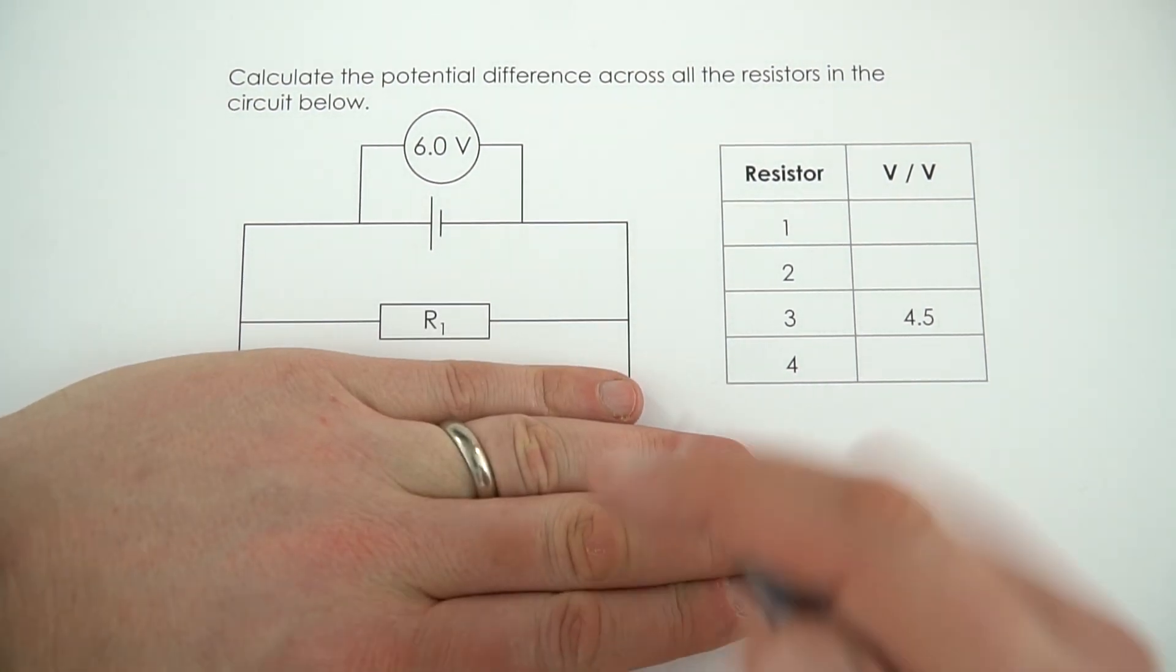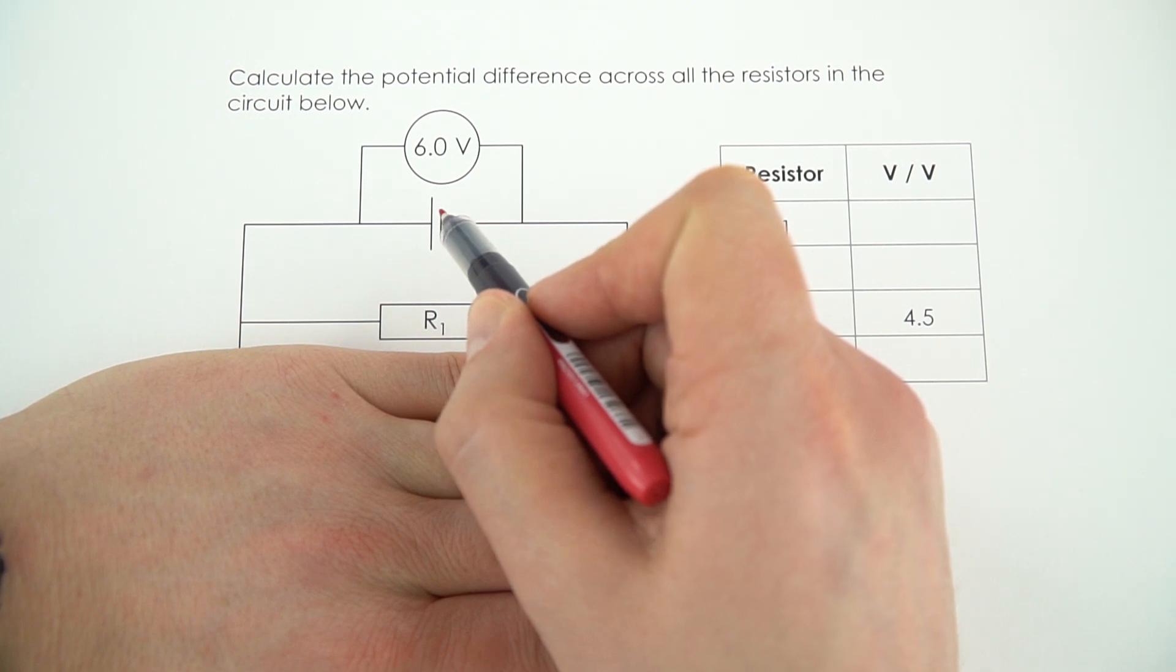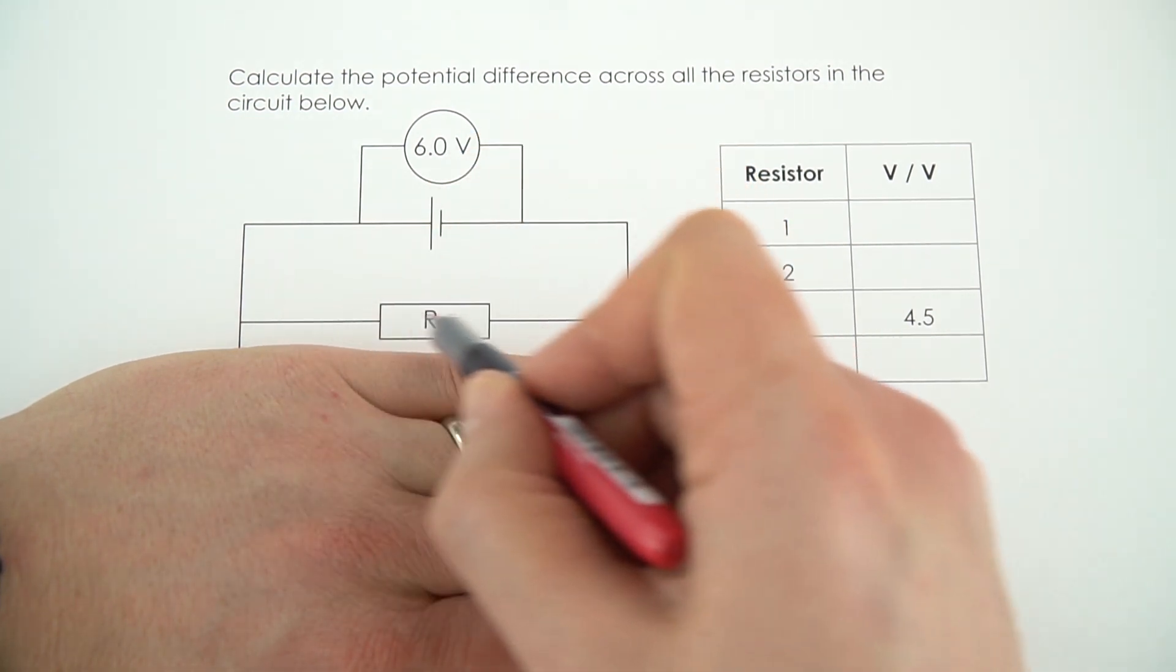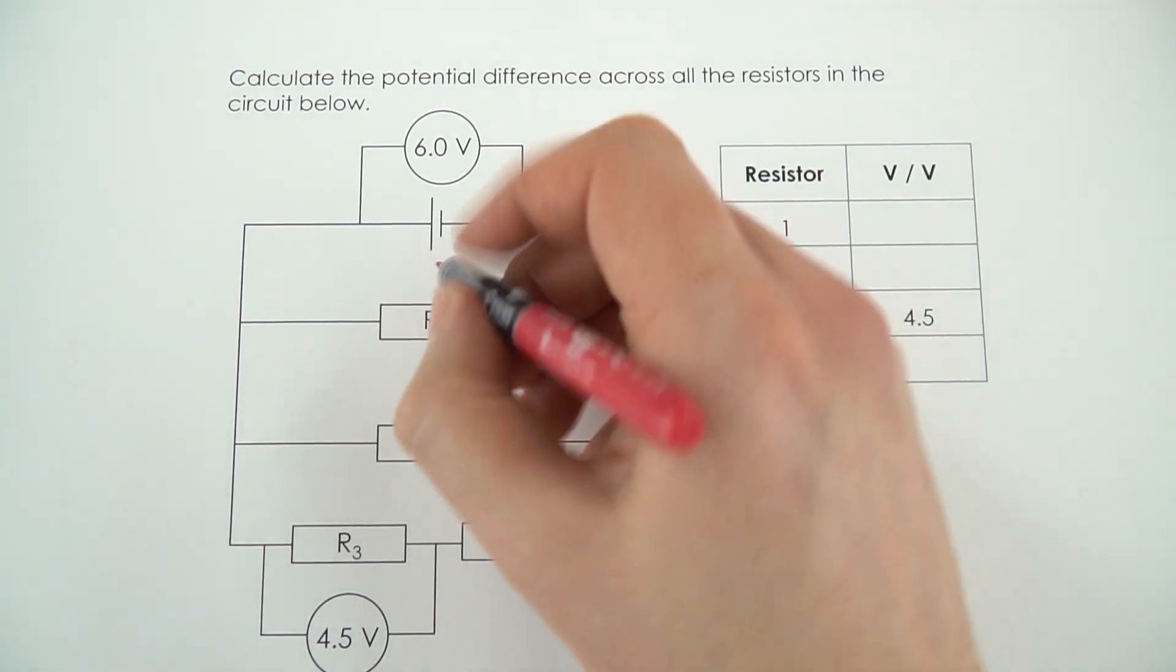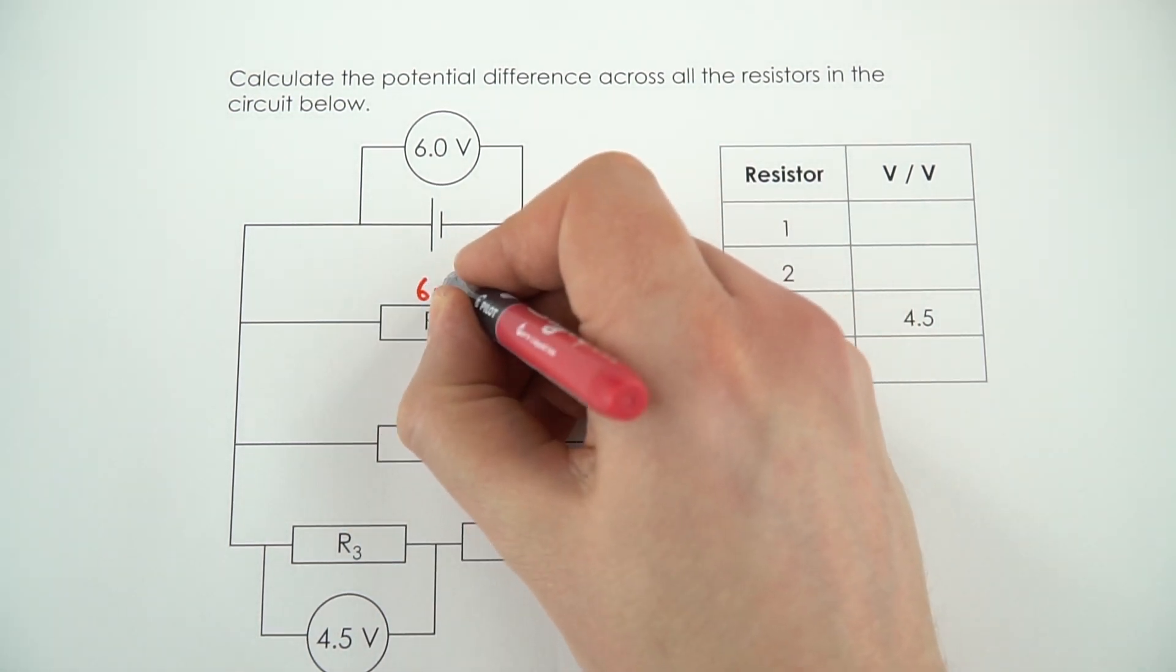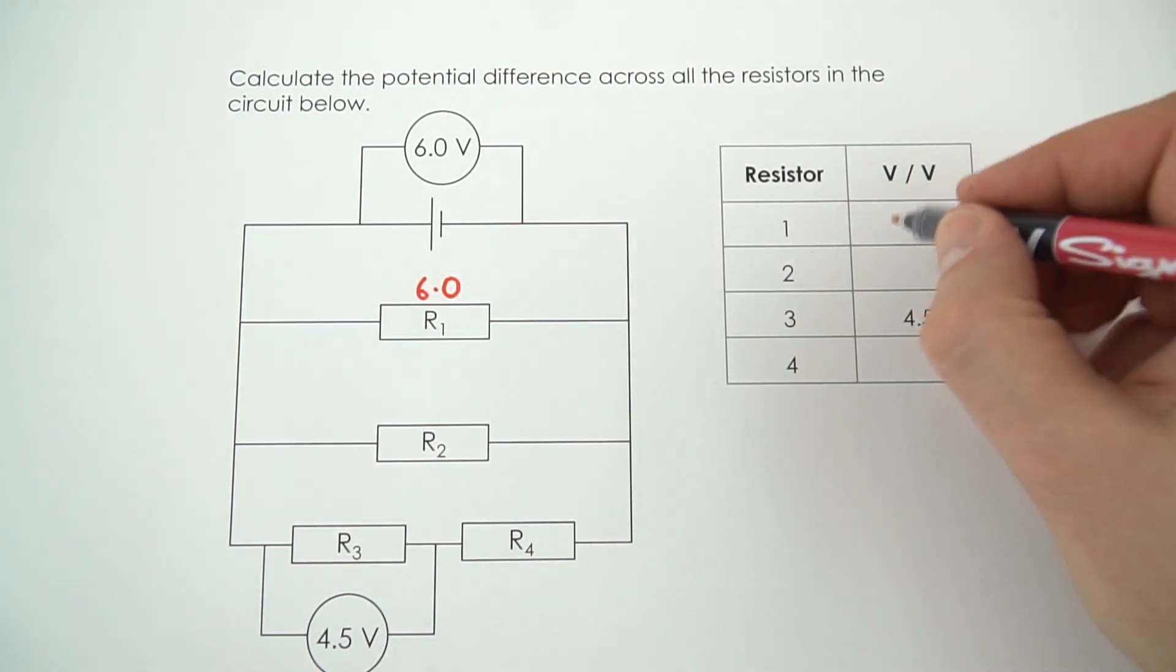Now the first part at the top is like a little loop of a circuit. So we've got a cell that has a value of 6 volts and there's only one resistor in this loop of the circuit. And that means across resistor 1 the value of the potential difference is also going to be equal to 6.0 volts. So the value for 1 is equal to 6.0.